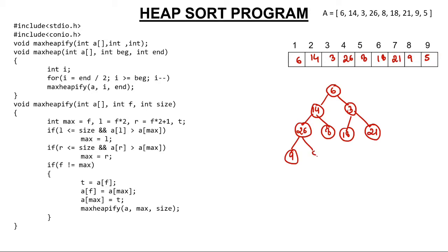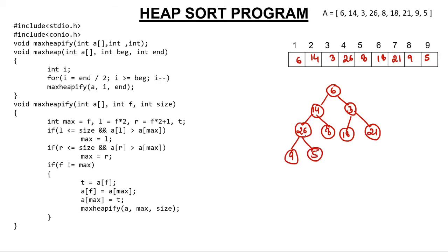First you go to the main function. You create an array and variable. You ask the user to enter the array, so the user entered it from 1 to 9, all the values which are these 9 values entered by the user.